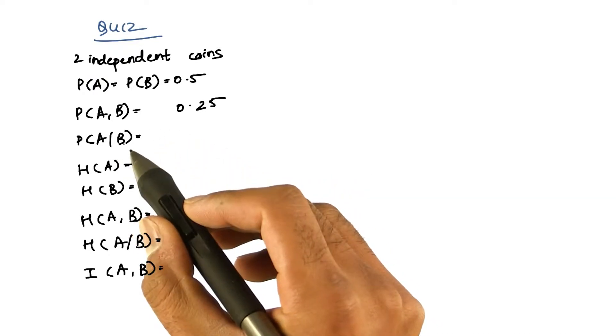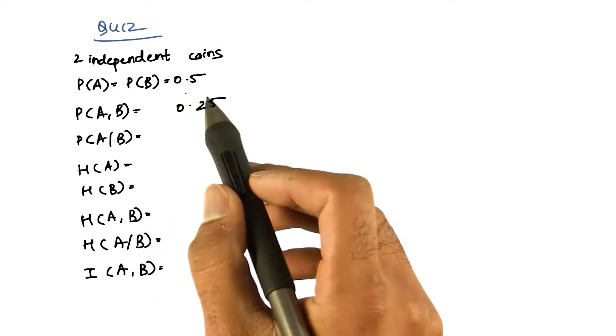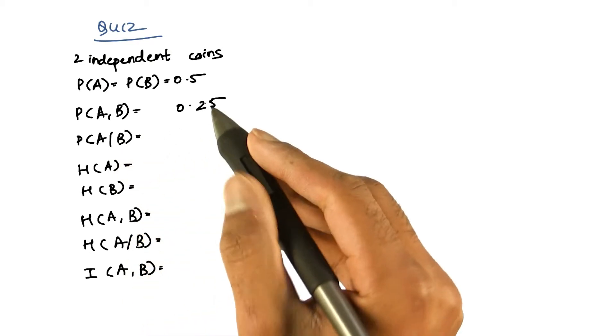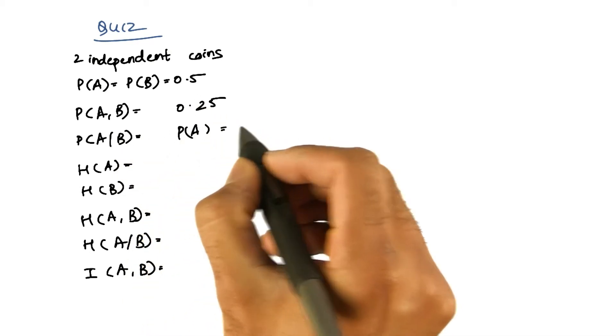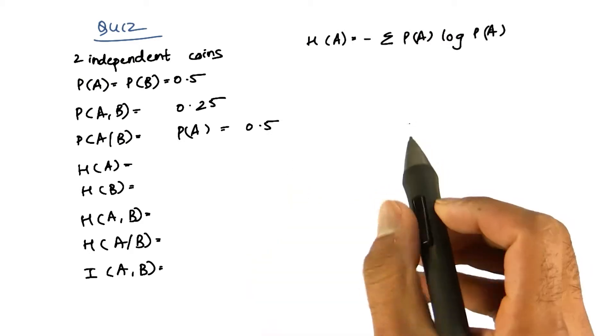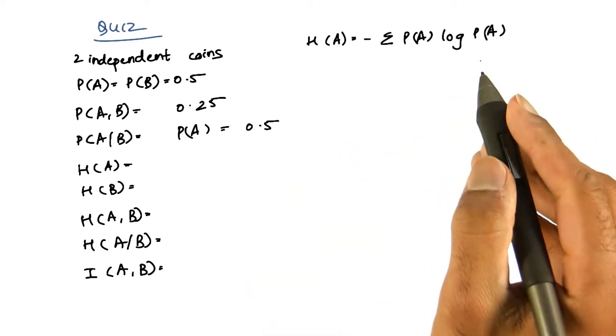Probability of A given B—since A and B are independent—is just probability of A, which is 0.5. The entropy of A is given by this formula.